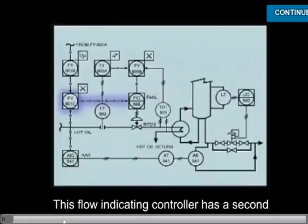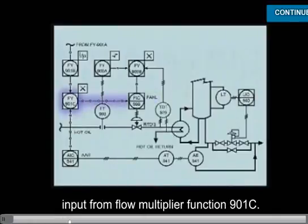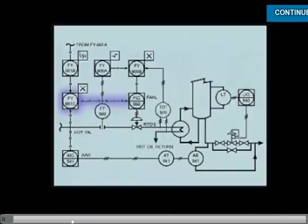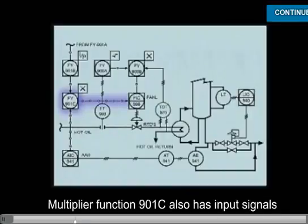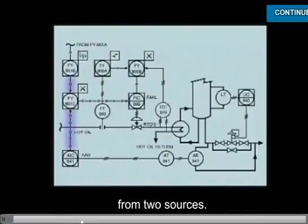This flow indicating controller has a second input from flow multiplier function 901c. Multiplier function 901c also has input signals from two sources.